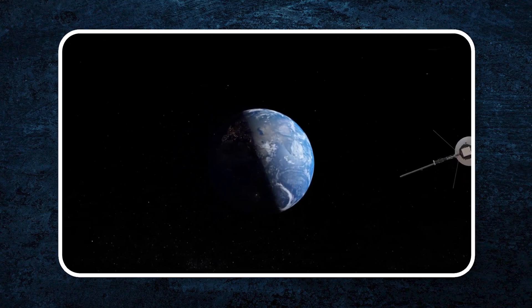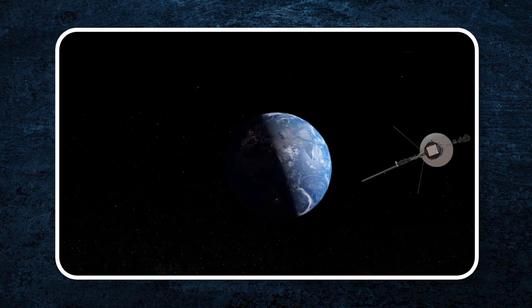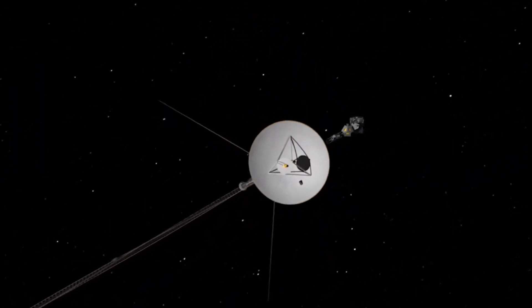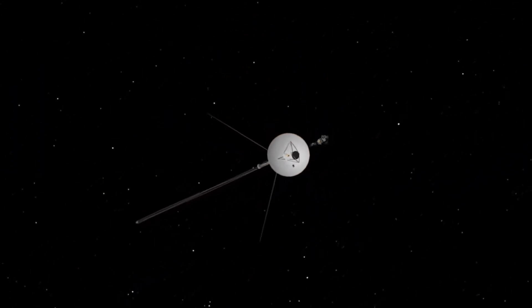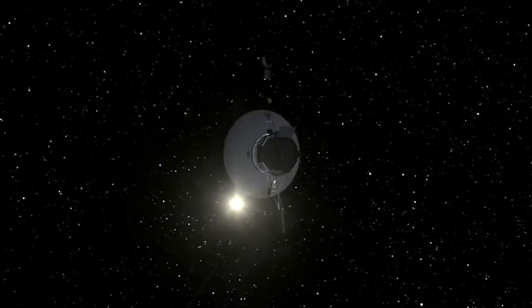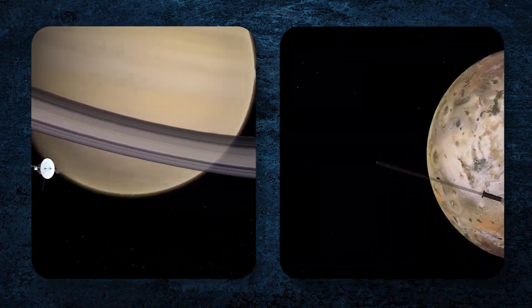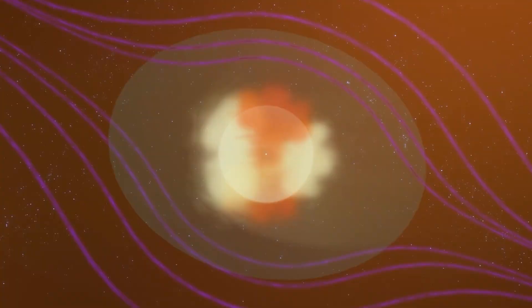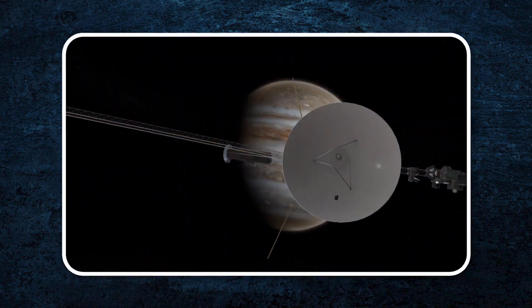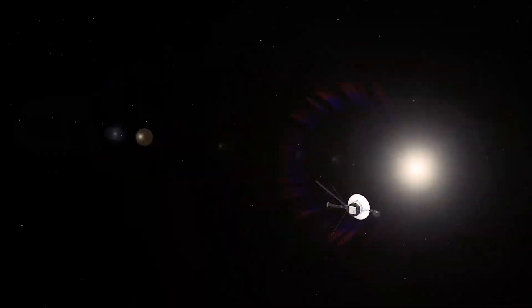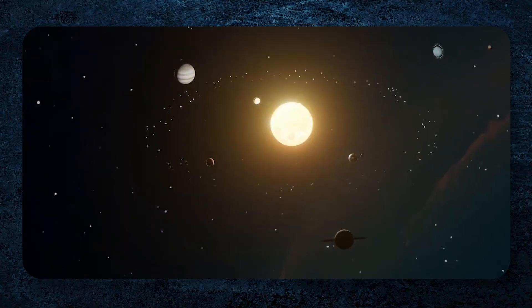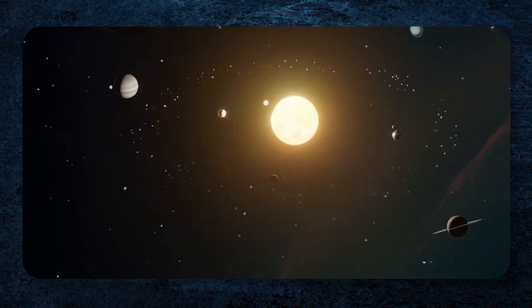Voyager 1 has traveled over 14 billion miles away from Earth, the farthest any human-made object has ever gone. It's been through thick asteroid belts, past Jupiter and Saturn, and even took some of the most incredible space photos ever seen. It also made history by being the first spacecraft to reach interstellar space, the area beyond the influence of our sun.